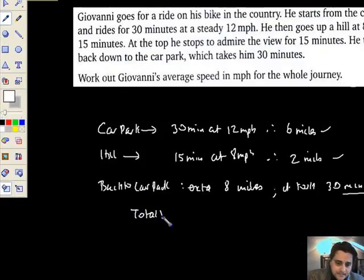Let's do total distance. What have we got? We've got 6 plus 2 plus the return journey 8 - we've got 16 miles.